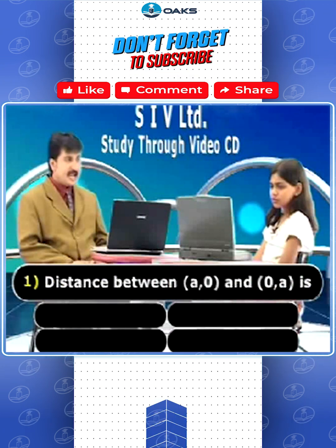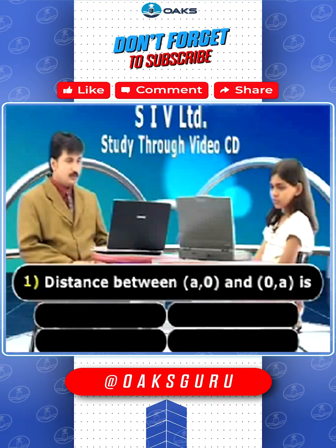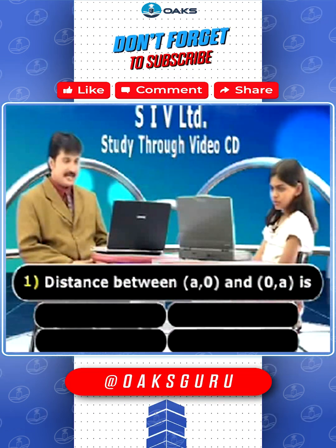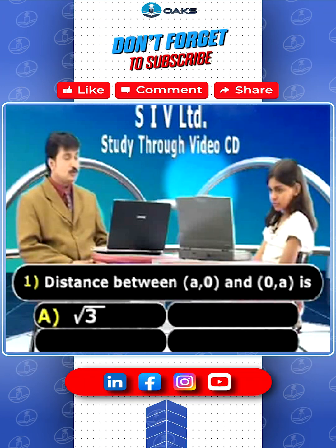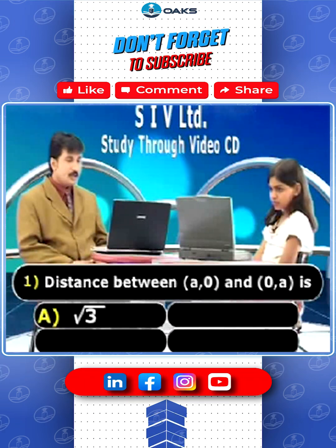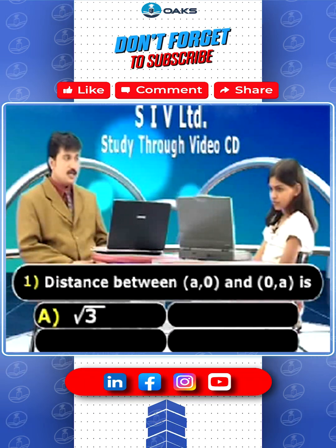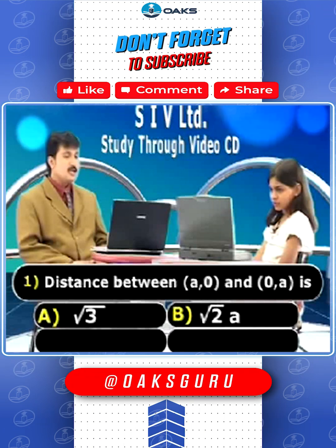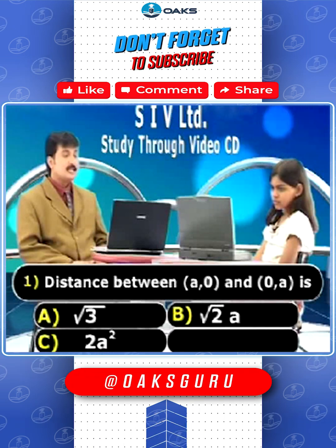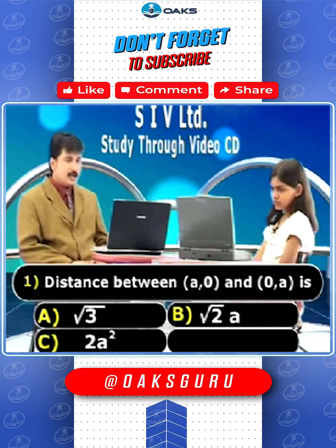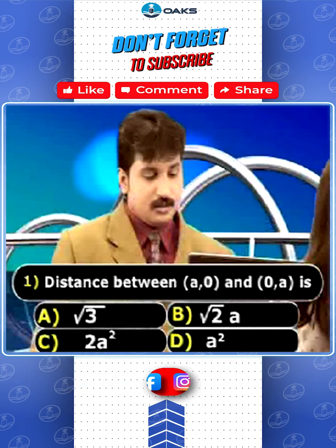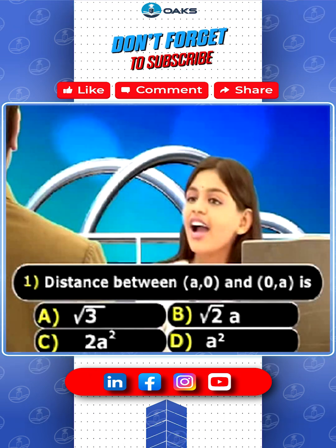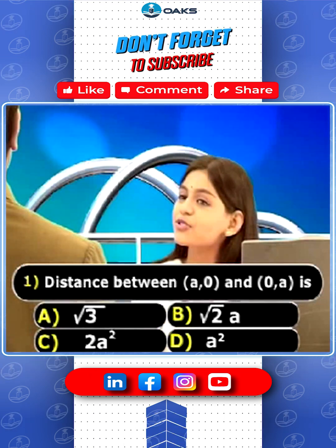Distance between (a, 0) and (0, a) is: option A root 3a, option B root 2a, option C 2a squared, and option D a squared. So what is your answer? I opt option B.